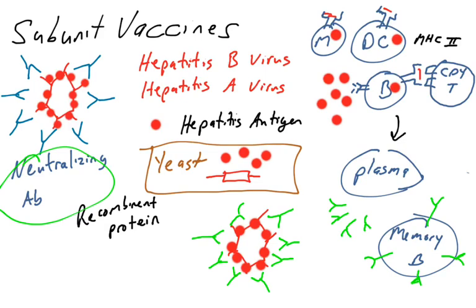Those are the three types of vaccine we covered in this video. The live attenuated vaccine, which is the best, really provokes the best immune response. The killed or inactivated vaccine, and the subunit vaccine.